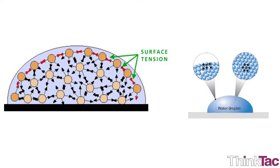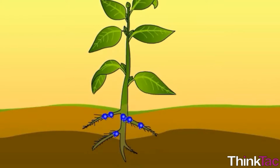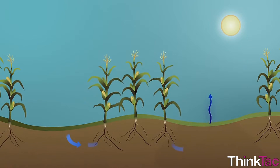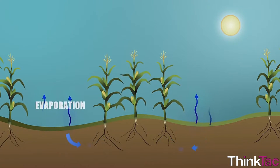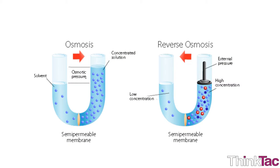Surface tension is the intermolecular attraction that forms a thin outer layer of water. The capillarity of a liquid is said to be high when adhesion is greater than cohesion. Capillary systems are seen in most plants. Water is brought up the tree and its branches. Evaporation and transpiration happen from the leaves, creating depressurization which helps pull more water up. Osmotic pressure, caused in the roots or at other places inside the plants or trees, also aids in the drawing of water.